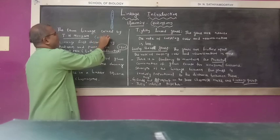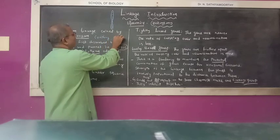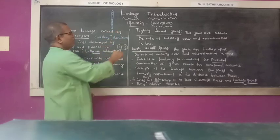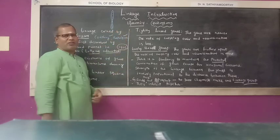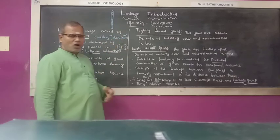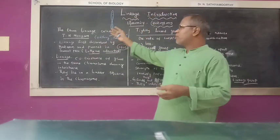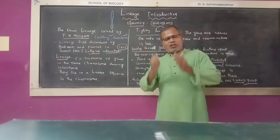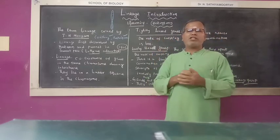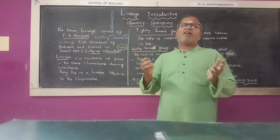Linkage has two phenomena: one is coupling and another is repulsion. Coupling represents the parental combination; repulsion represents the recombinants. Coupling and repulsion are the two aspects of linkage, according to T.H. Morgan.